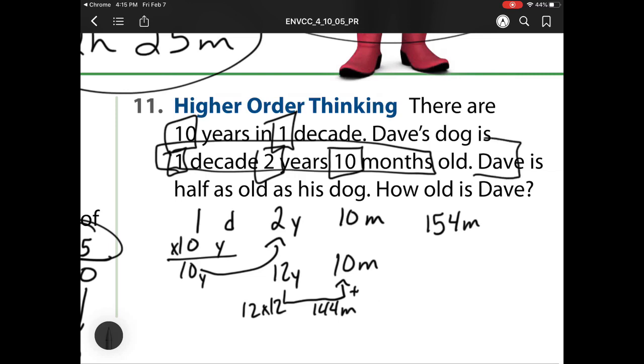And it says Dave is half as old as his dog. So what I now need to do is I need to do some division. 154 divided by 2. 2 goes into 15 how many times? 7 times. Multiply. Subtract. Check. And bring down. 2 goes into 14 7 times. Multiply. Subtract. And check. So Dave is 77 months old.